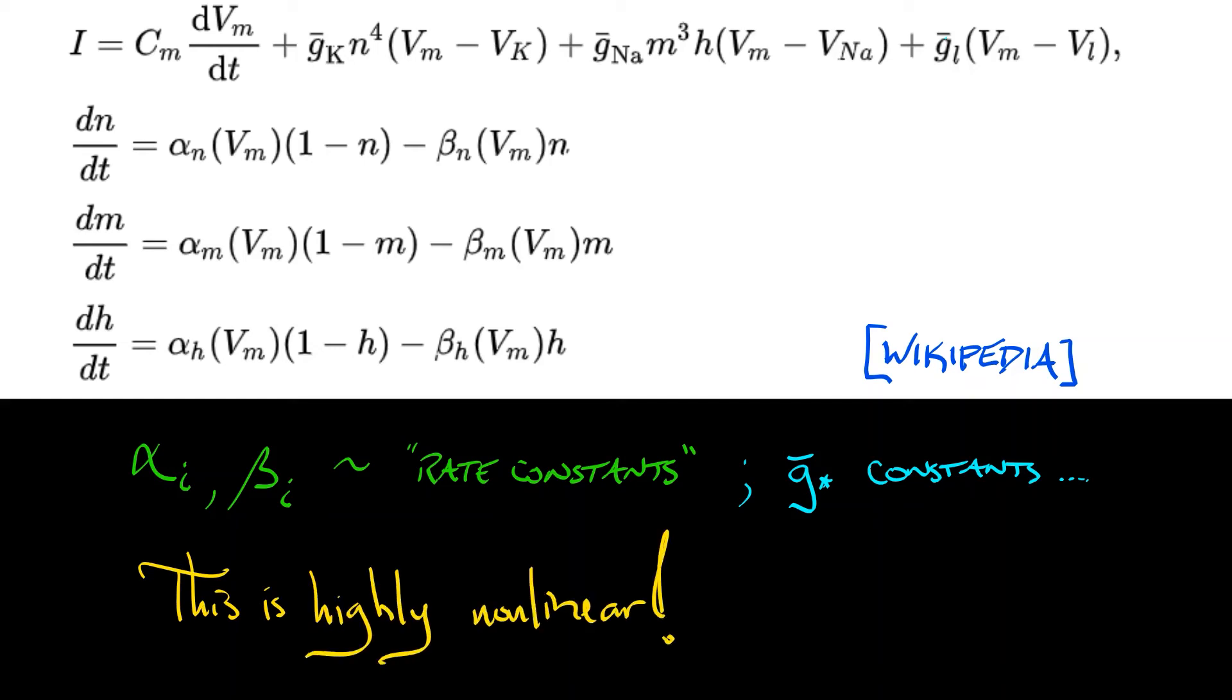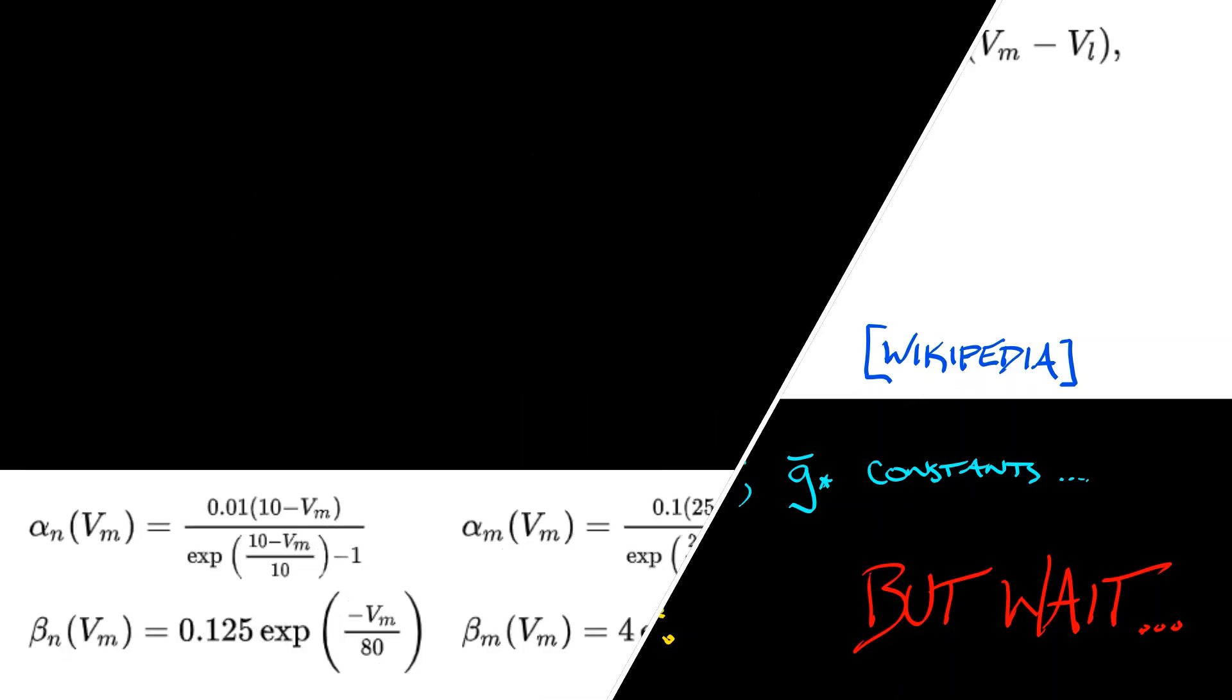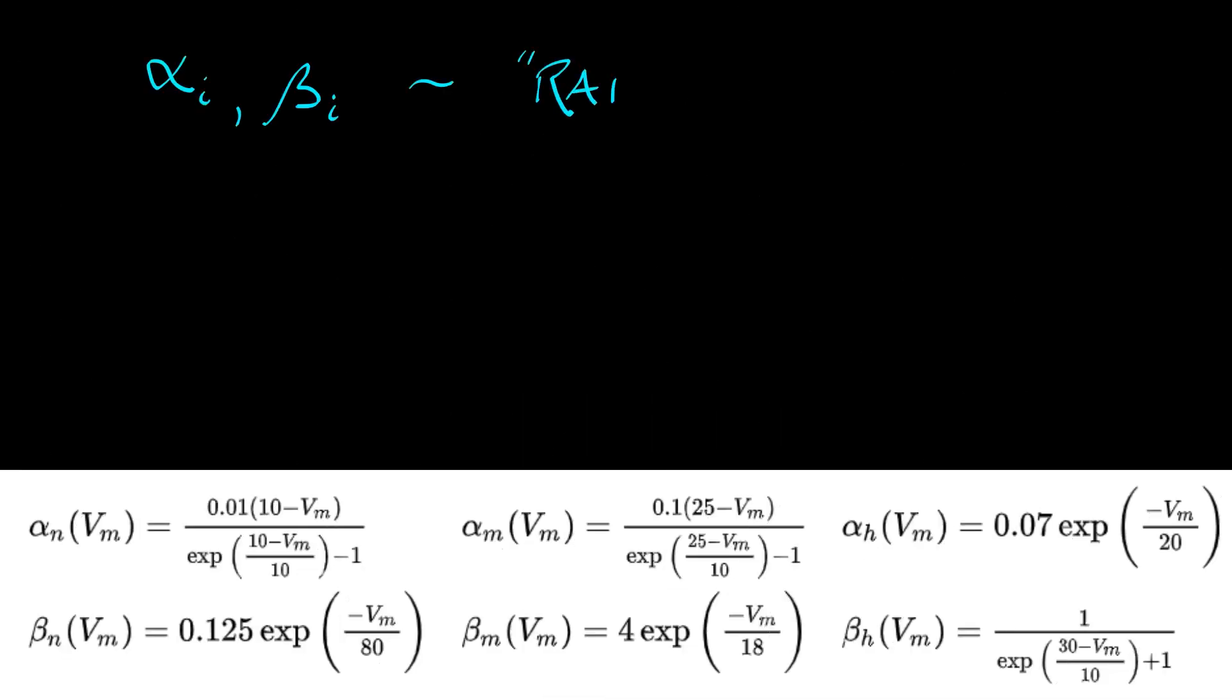You've got some to the fourth power, to the third power, that kind of stuff. Oh wait, we're not done yet. Because if we inspect those alphas, those betas, those rate constants, well, they really depend on V. In what manner? Oh well, this is what the experiments led to.